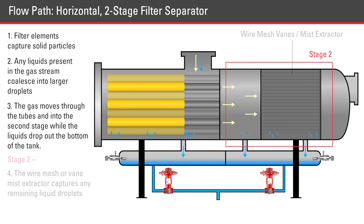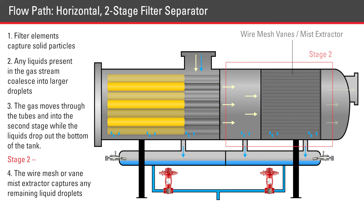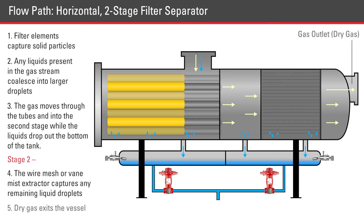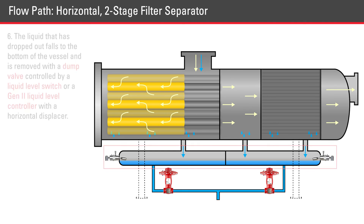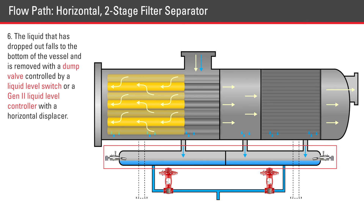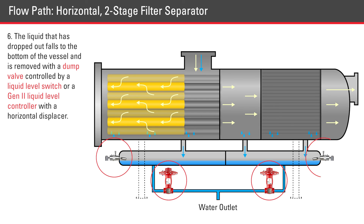In the second stage, the wire mesh vane mist extractor captures any remaining liquid droplets. The resulting gas stream is then virtually free of all particles no larger than the micron filter being used. The liquid that has dropped out falls to the bottom of the vessel and is removed with a dump valve controlled by either a liquid level switch or a Gen2 liquid level controller.